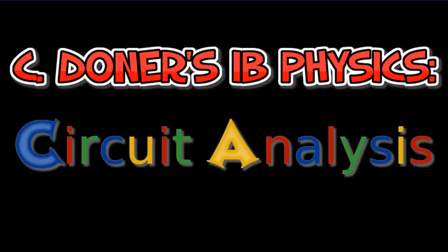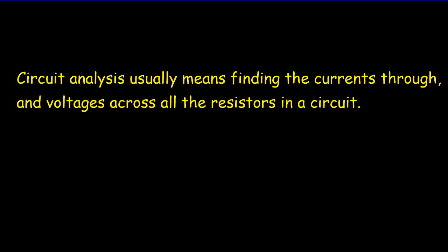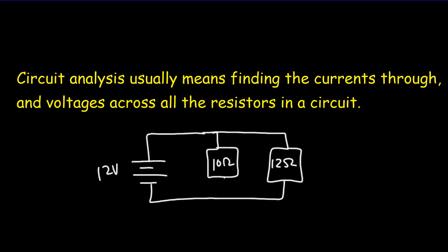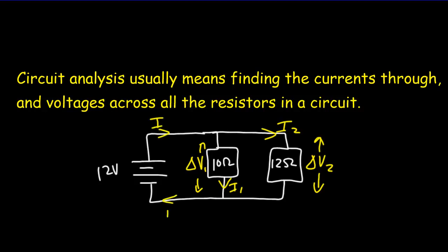Let's see what's meant by circuit analysis. For the most part in this course, you'll be told a battery voltage - maybe it's 12 volts - and then you'd have some sort of circuit with some resistors in it, say 10 ohms and 12 ohms. Generally the job you have to do when asked to do circuit analysis is to find out how big the voltage is across each resistor, how big the current is going through each resistor, and how big the current is coming out of and going back into the battery.